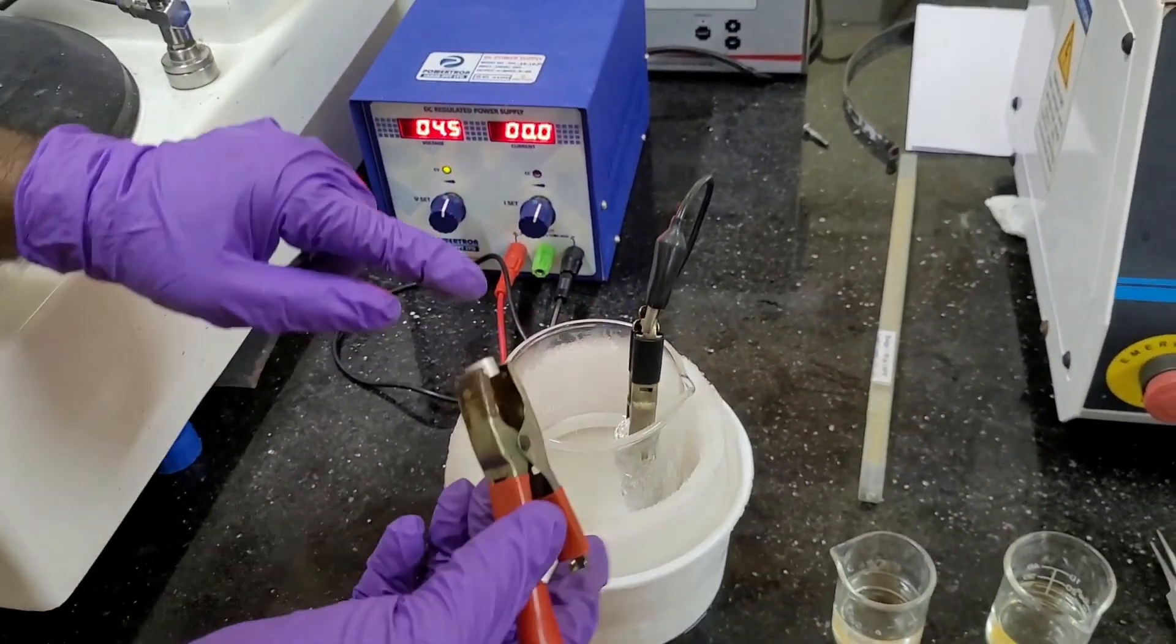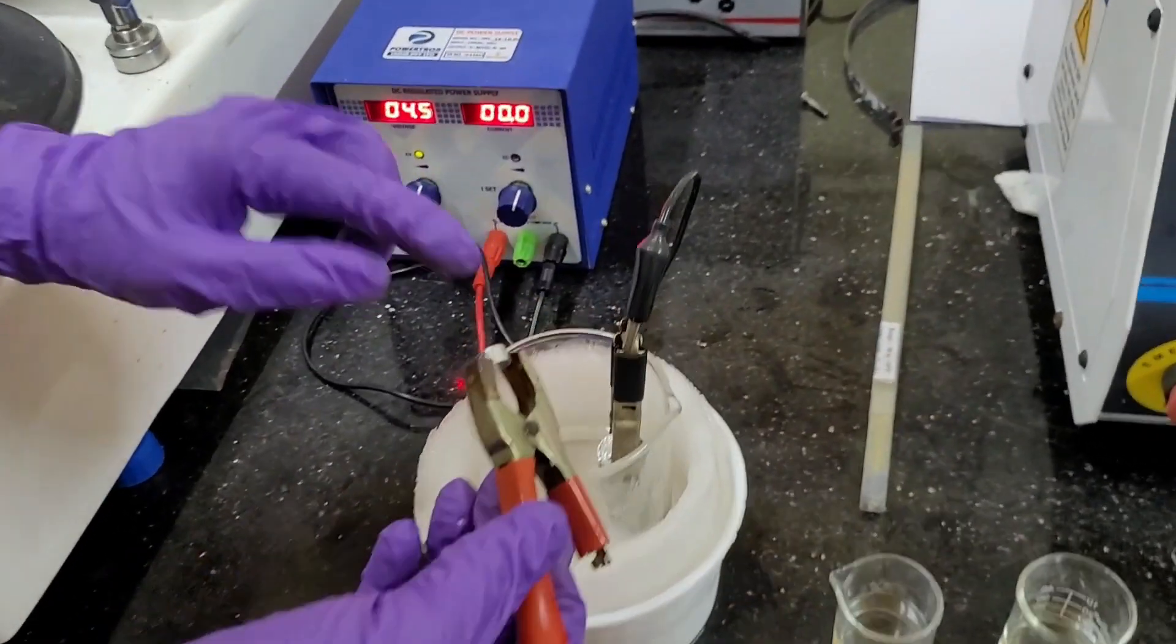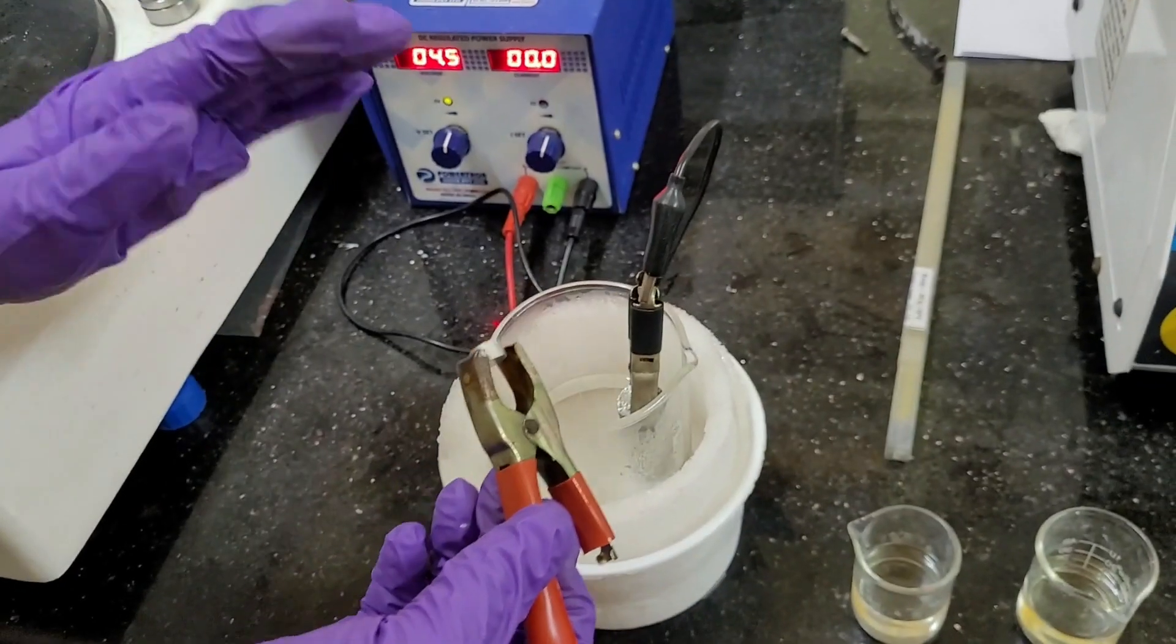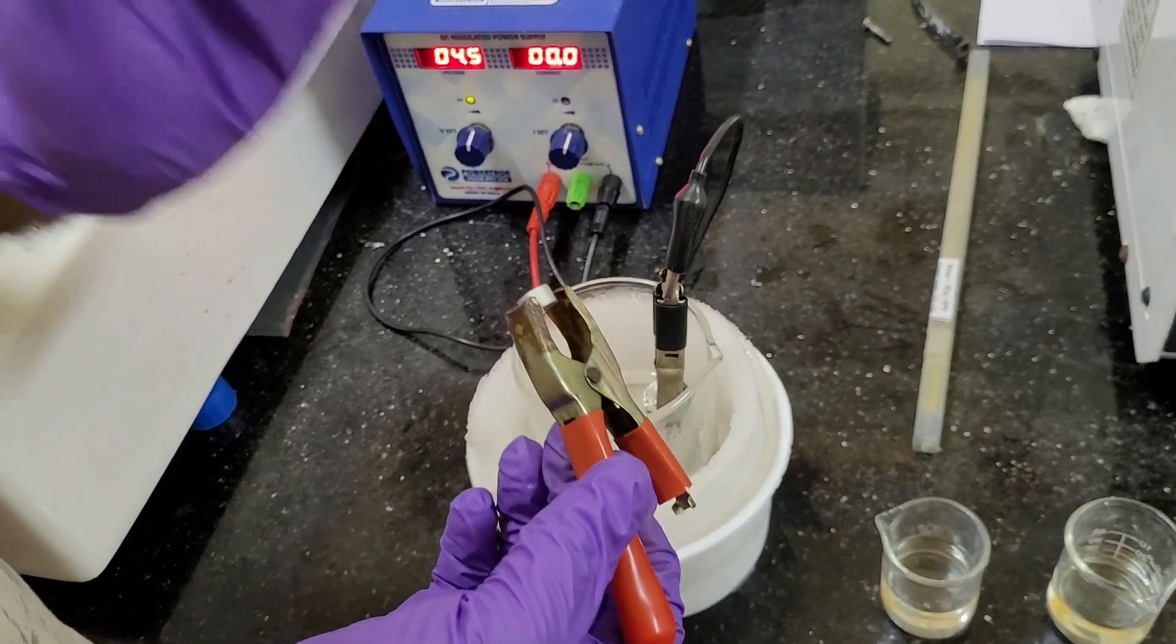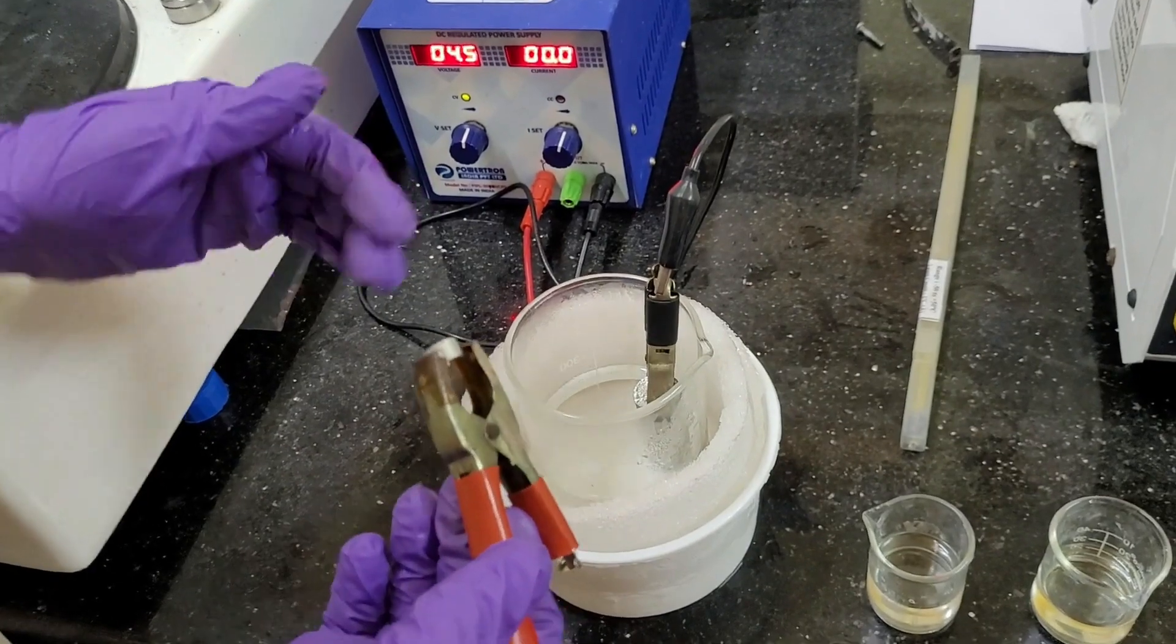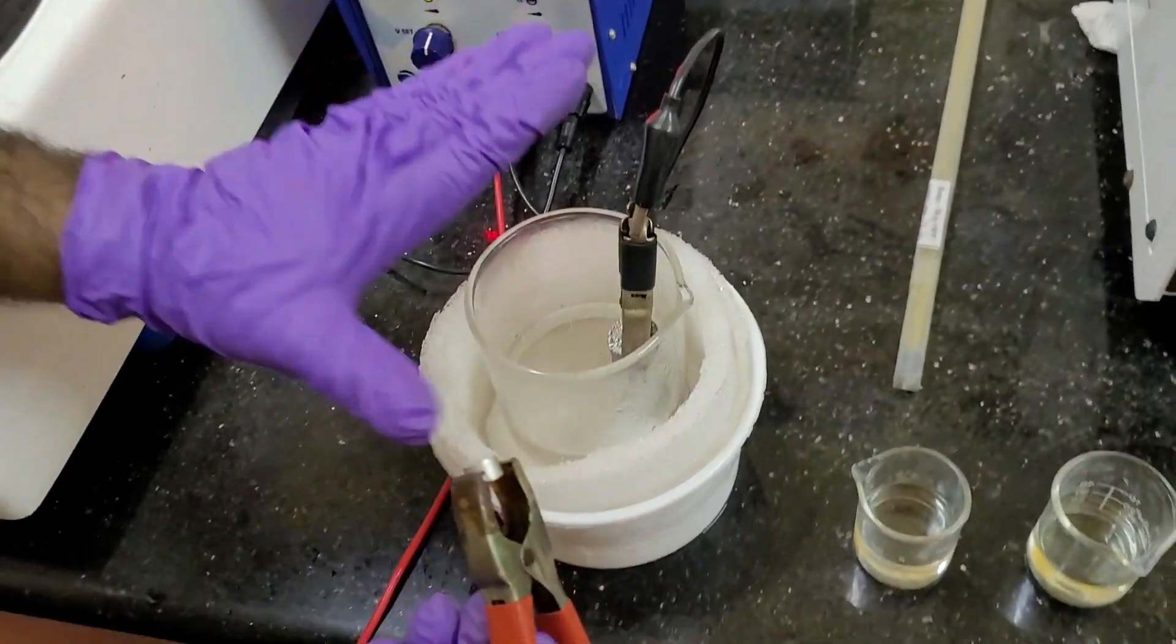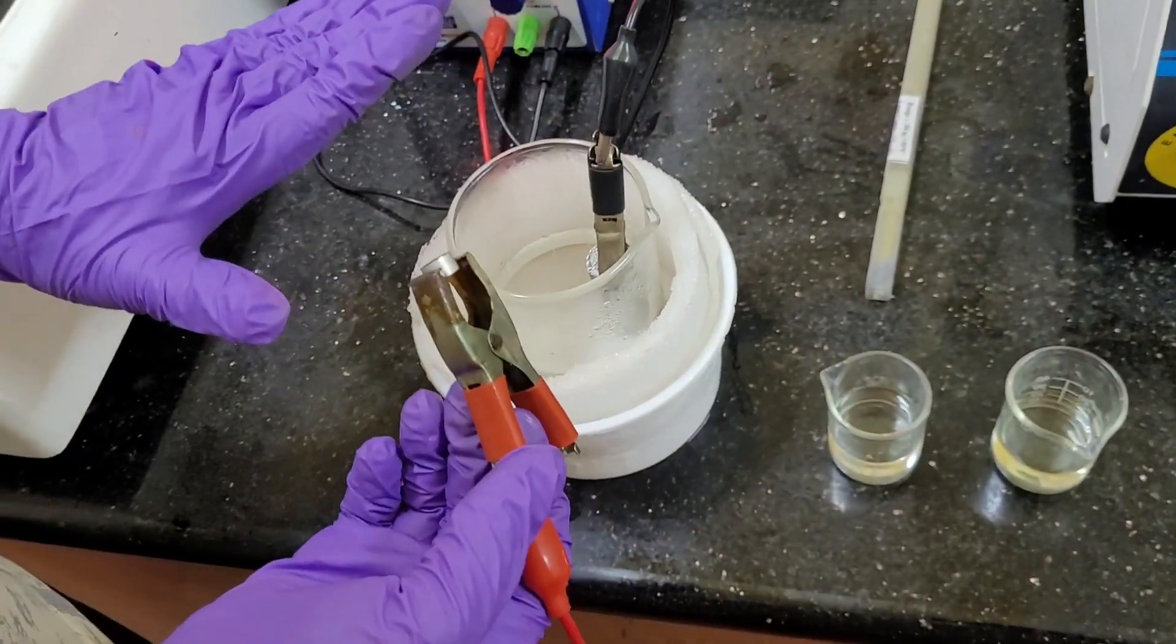We are going to use, when we start the electropolishing, we are going to measure the time. So, our time is, optimized time is near about 5 to 6 seconds. And now, we are going to start. And the temperature maintained is minus 20 degrees centigrade approximately.